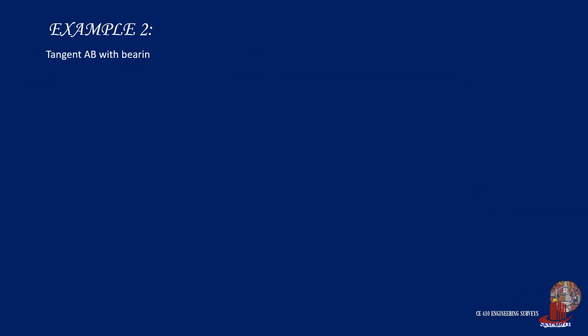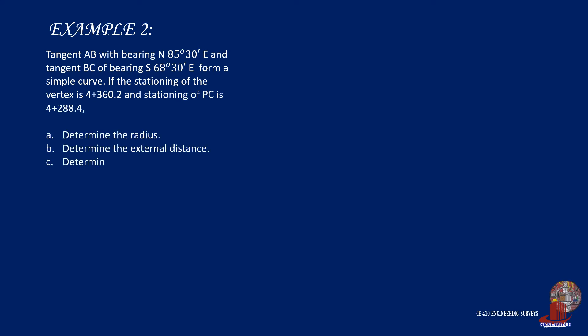The second example: tangent AB with bearing north 85 degrees 30 minutes east, and tangent BC with bearing south 68 degrees 30 minutes east, form a simple curve. If the stationing of the vertex is 4 plus 360.2, and stationing of PC is 4 plus 288.4, determine the radius, the external distance, the long cord distance, and the length of curve.